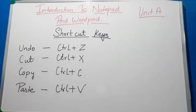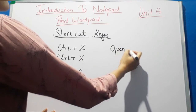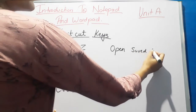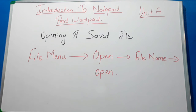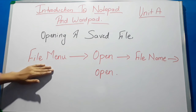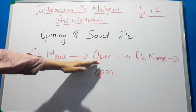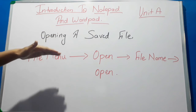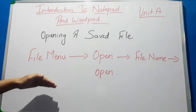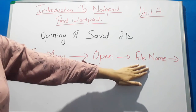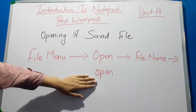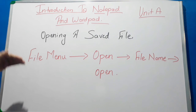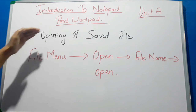Many more shortcut keys are given in your book and we will discuss those in the live class. Now, how to open a saved file: go to the File menu option and click the Open button. Many options will appear — all the names of the files you have saved will be displayed. Choose the file you want to work on, click on it, then click the Open button and the document will be displayed on your screen.